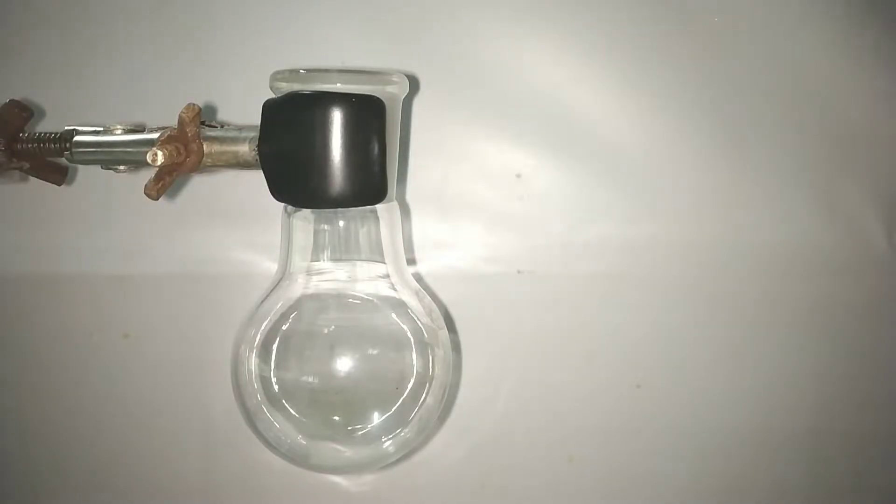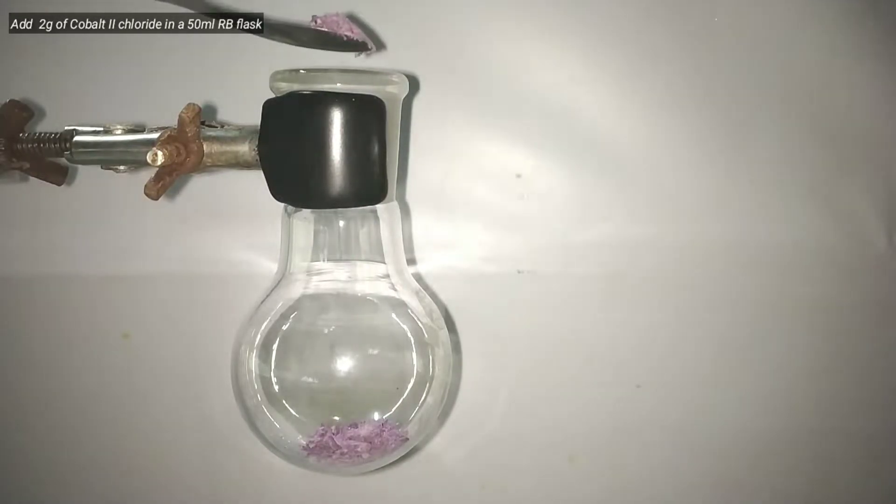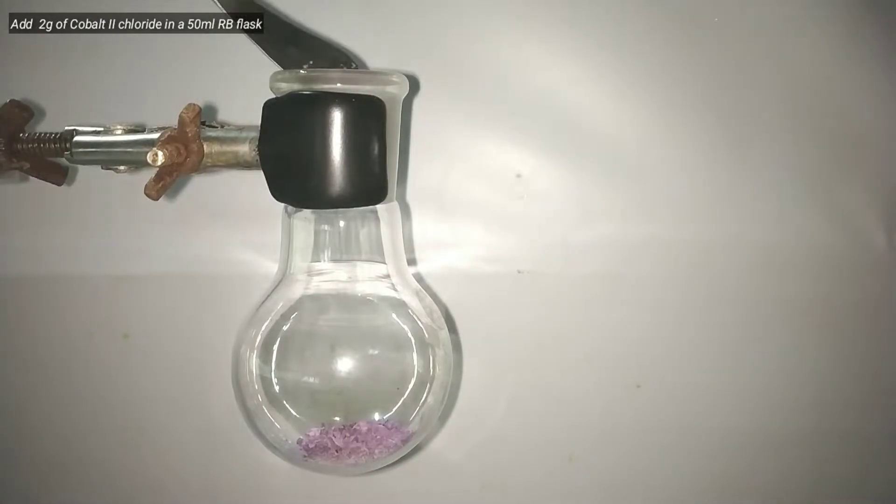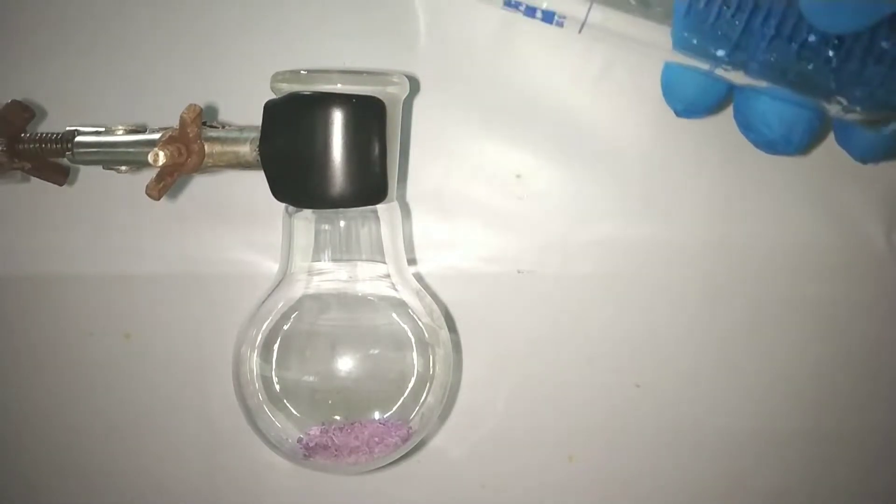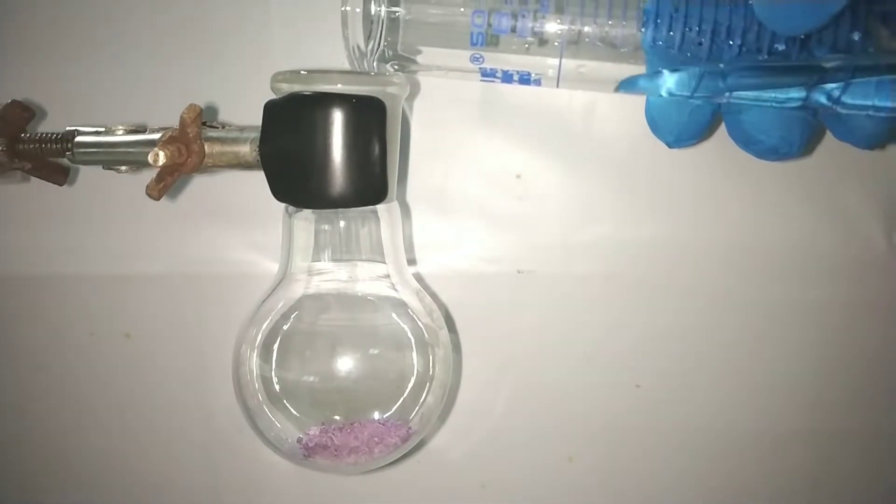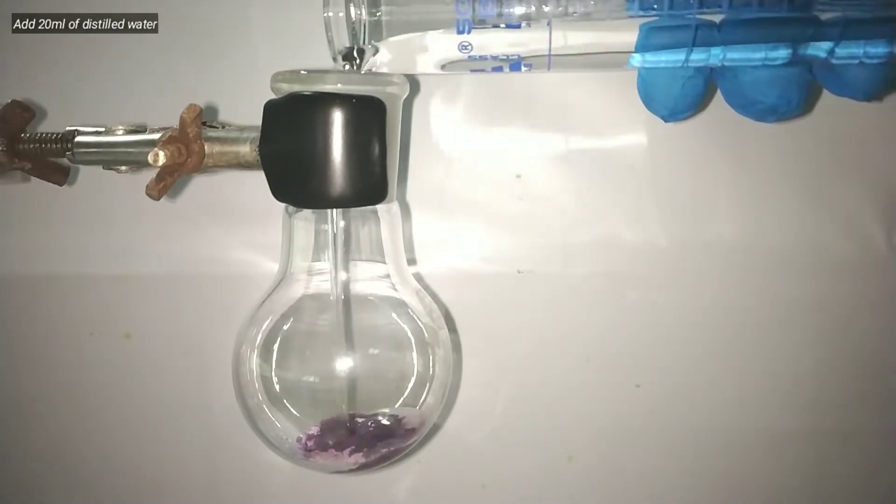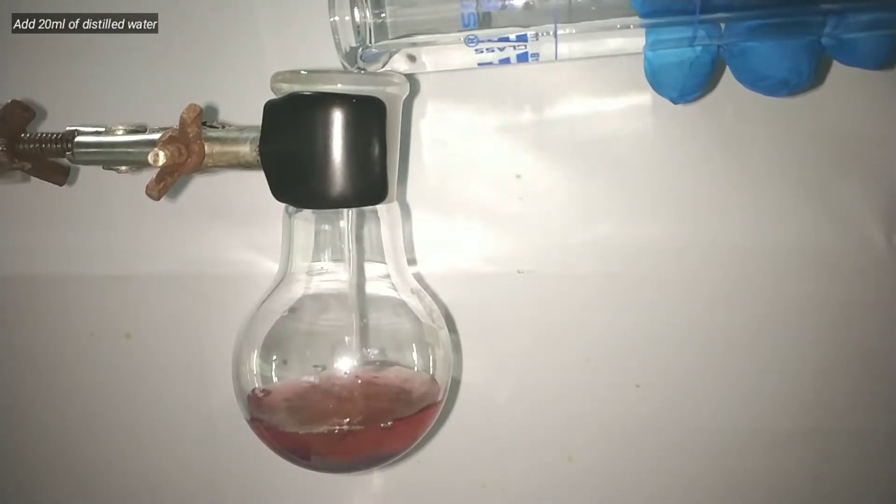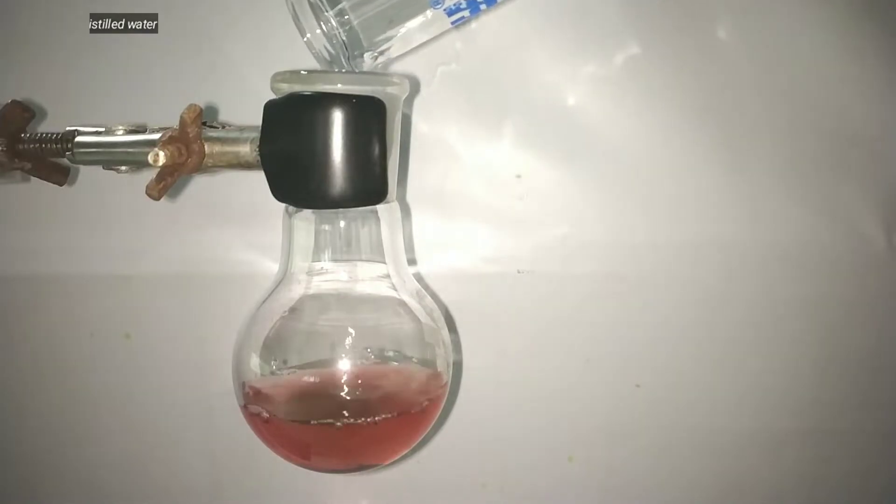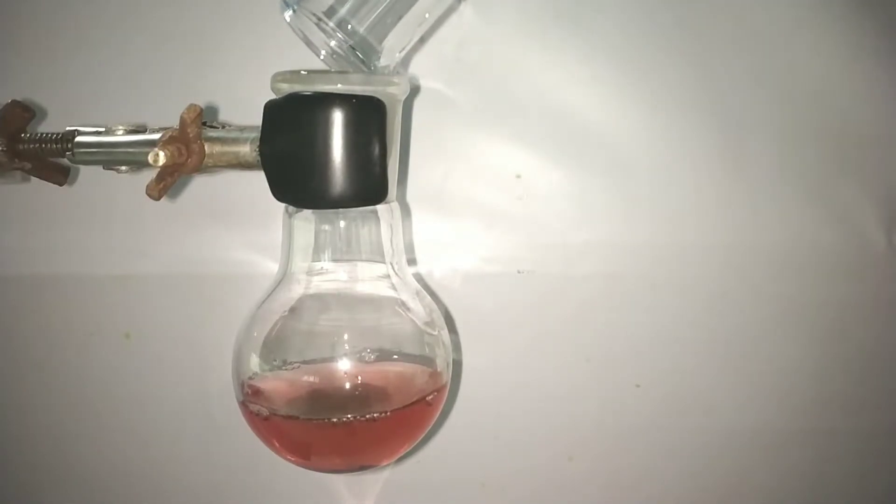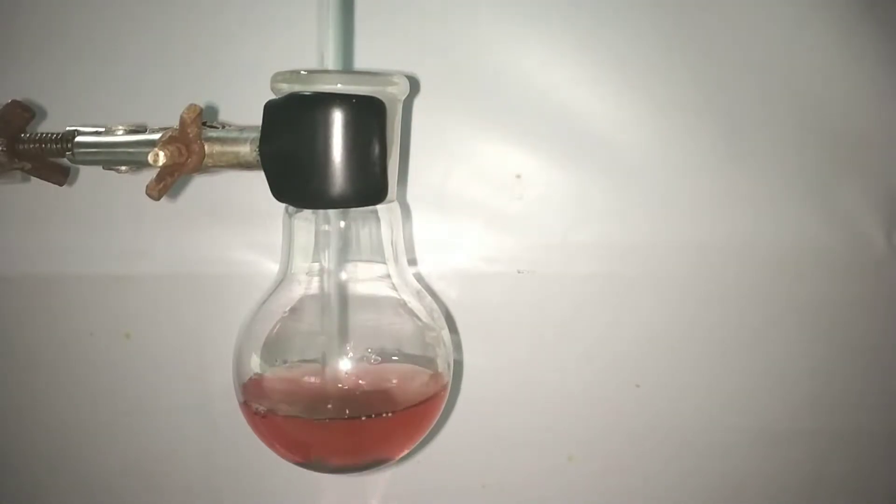Start by taking a small 50 ml round bottom flask and add 2 g of cobalt(II) chloride into it. Now add 20 ml of distilled water into it to dissolve the salt. The solubility of the compound in water is very high, so it dissolves easily giving a red colored solution. With a glass stirring rod, dissolve the compound in it.